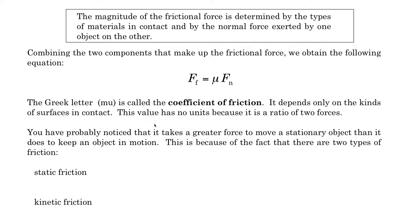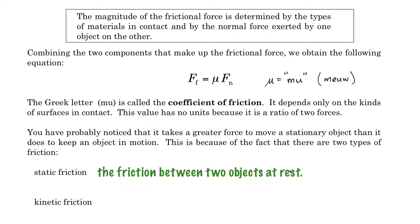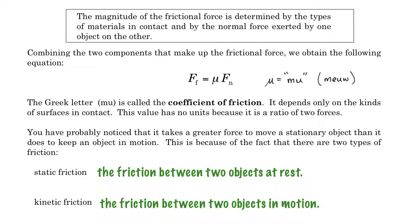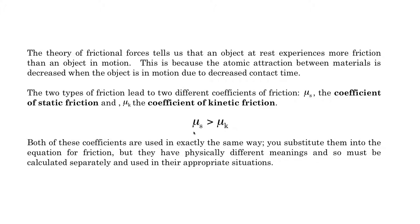One thing you might have noticed is that it takes greater force to move a stationary object than it does to keep that same object in motion. This is because there are two types of friction: the coefficient of static friction — the friction between two objects at rest — and kinetic friction, the friction between two objects in motion. The coefficient of static friction, mu-s, is bigger than the coefficient of kinetic friction, mu-k.